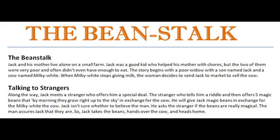The story begins with a poor widow with a son named Jack and a cow named Milky White. In some versions of the story, the cow Milky White has been referred to as 'Bass' also. When Milky White stops giving milk, Jack's mom decides to send Jack to market to sell the cow. She thought, when the cow is unable to give any milk, how can she afford to feed the cow when they don't even have enough food for herself and her son. That's why she decided to sell the cow and told Jack to go to the market.